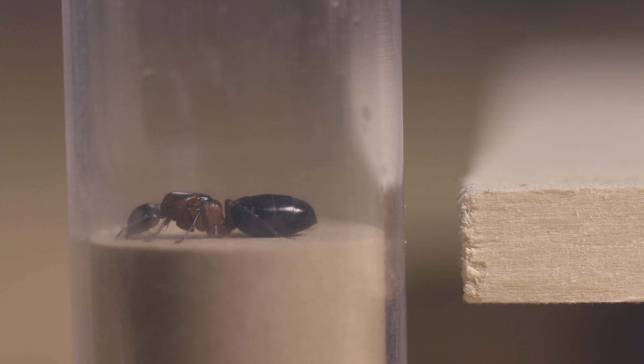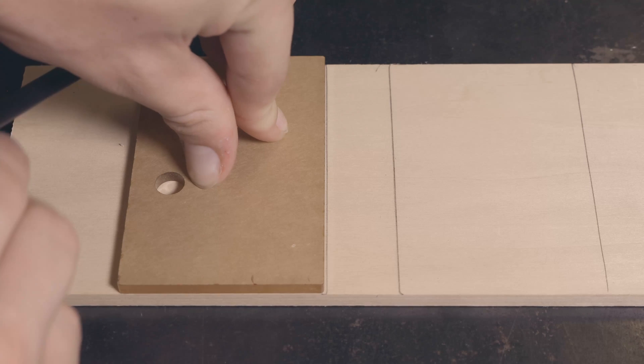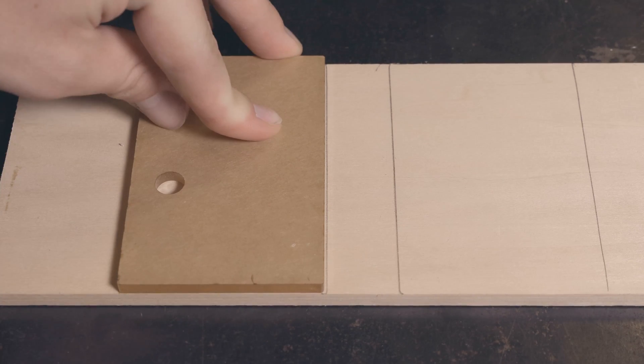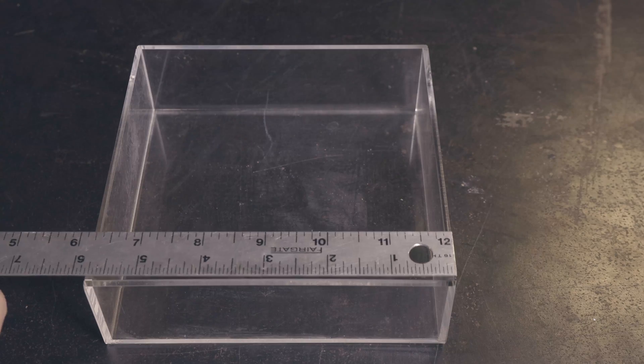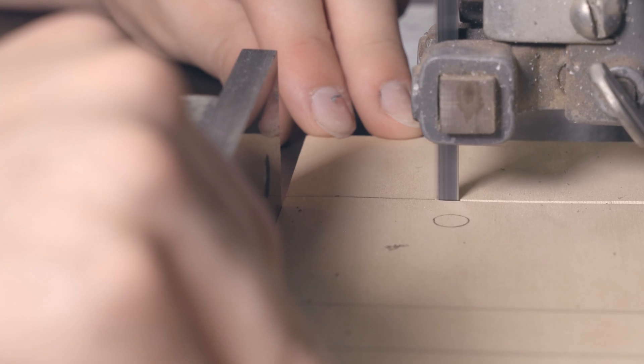Our viewers are always looking for easy and economical ways to keep ants, so I've tried to keep this tutorial fairly simple and to make sure that I'm not using tons of tools or inaccessible materials. When designing the formicarium, you'll want to make sure that your main nest block is at least as thick as your queen is tall, so that she will be able to move about freely. Remember the old adage, measure twice, cut once.